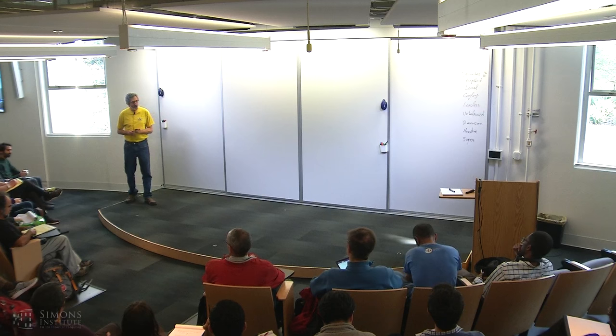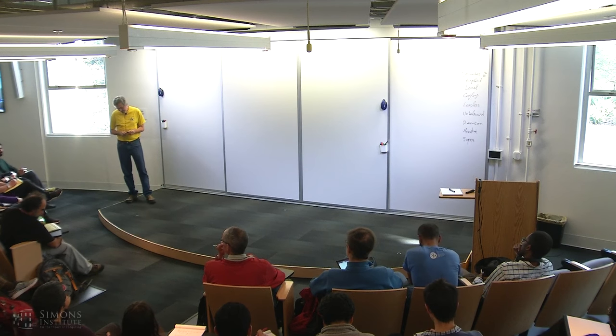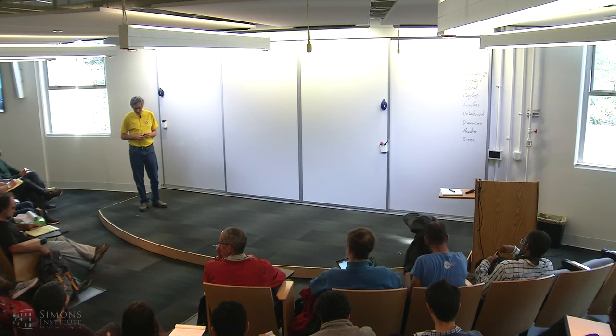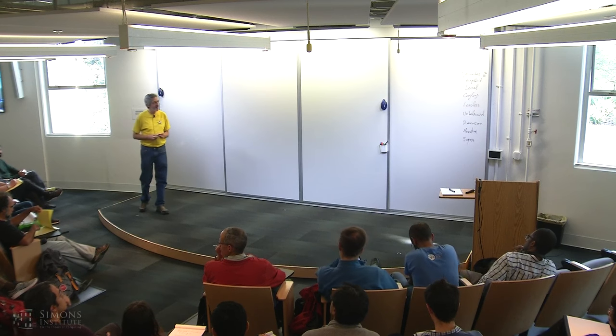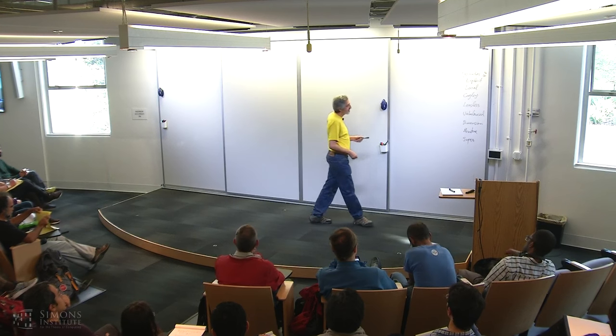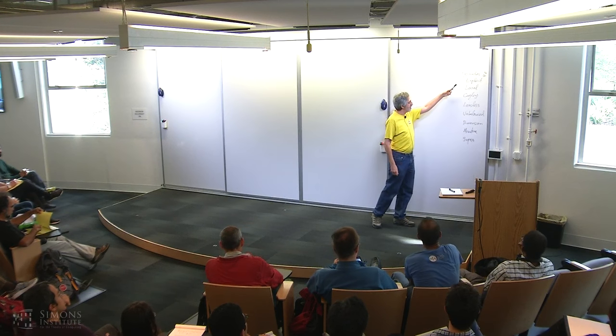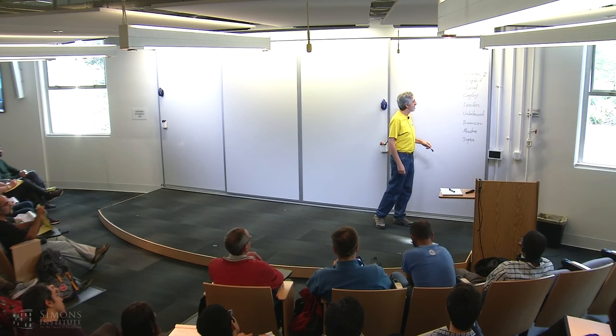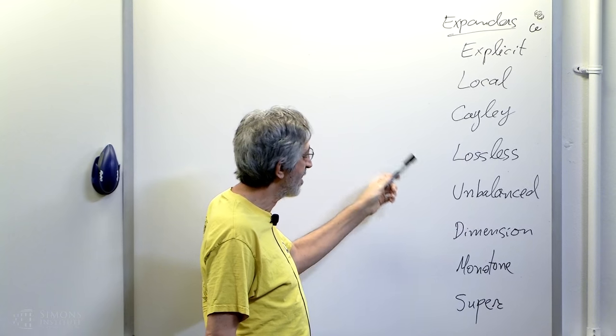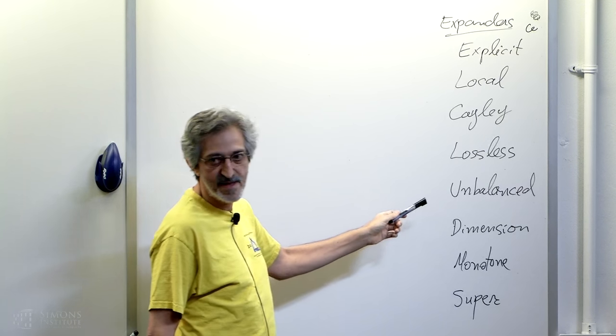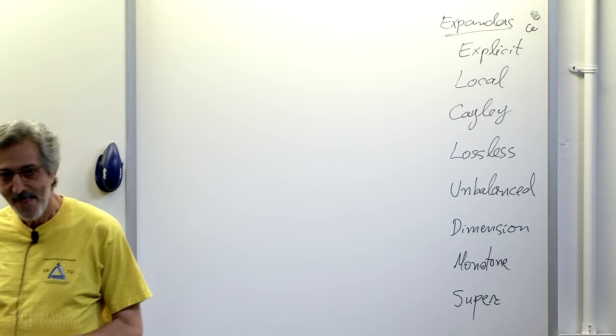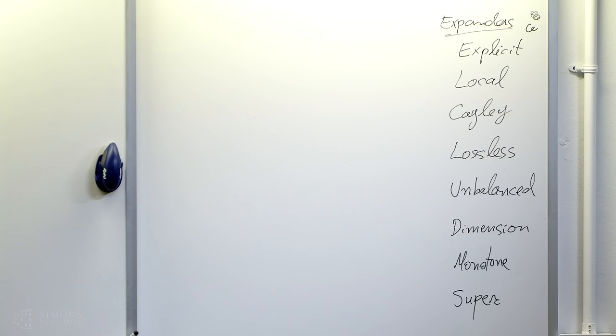You can think of it as a set of open questions. You can think of it as also some survey of the used variety and its growing of types of expanders. I've written here the types of expanders I'll talk about where I'll define what an explicit expander is. I'll talk about local expanders, Cayley expanders, lossless expanders, unbalanced expanders, dimensions expanders, monotone expanders, and super expanders. I don't know if you... 45 minutes. Exactly, yeah.